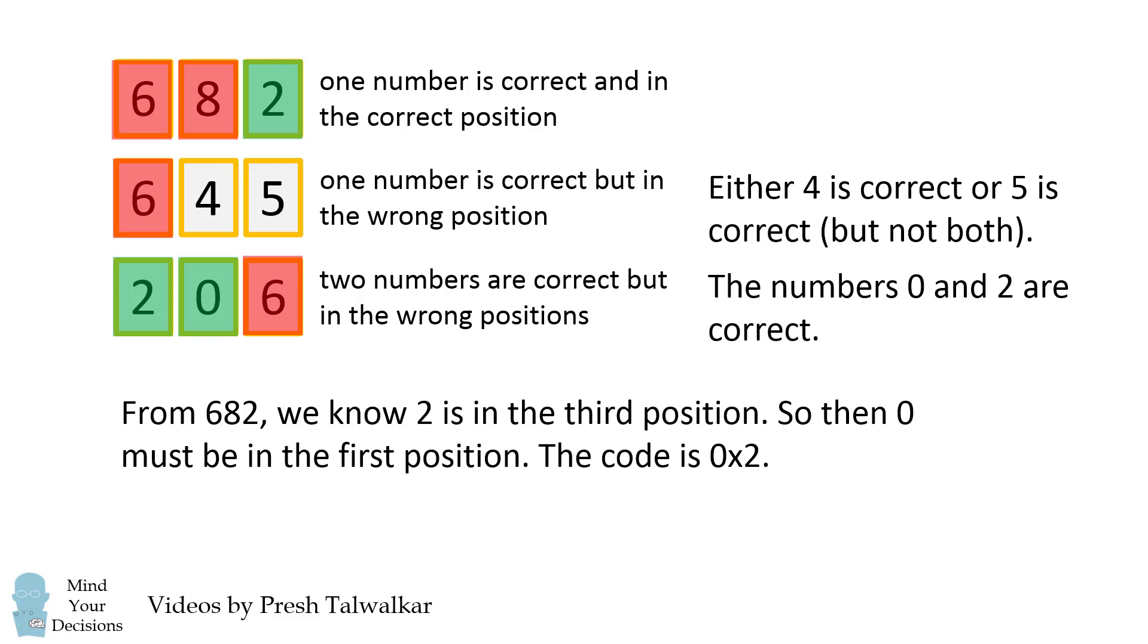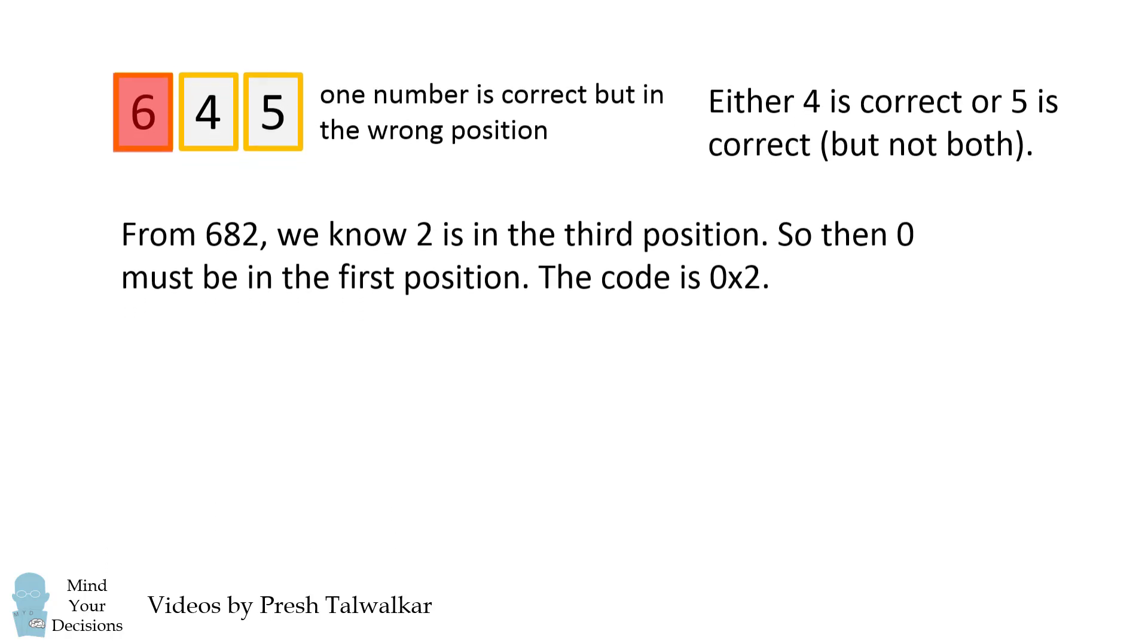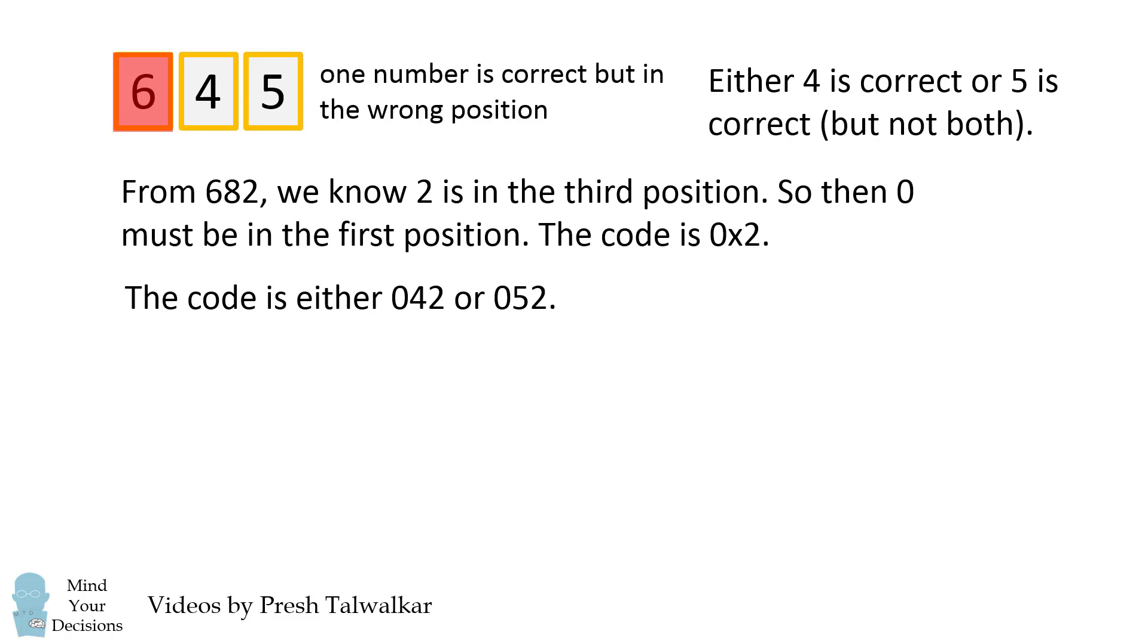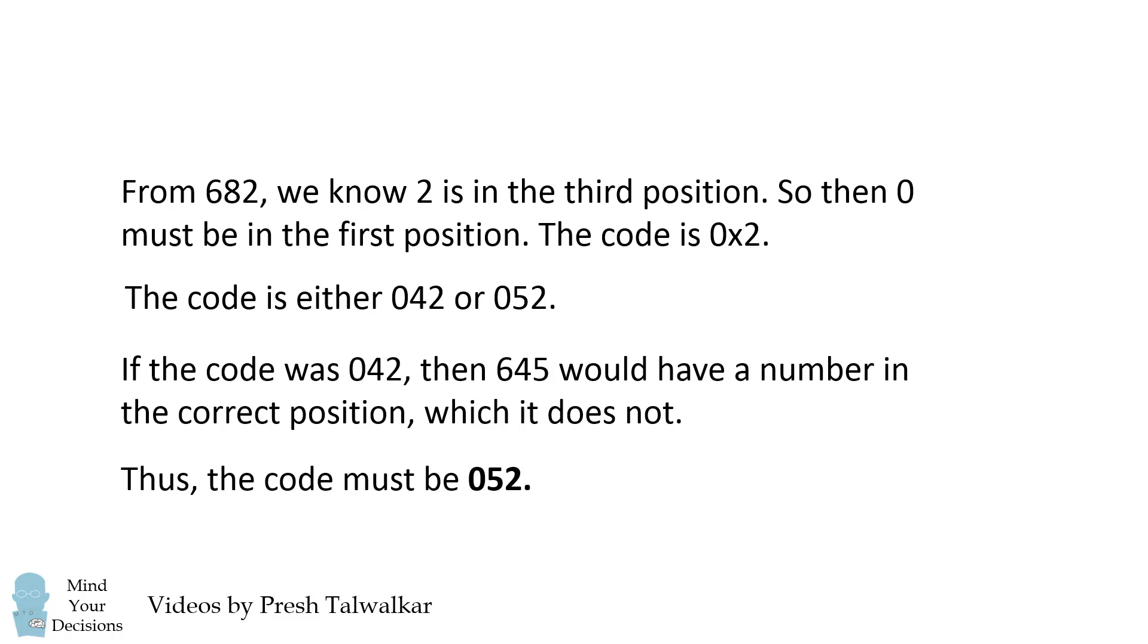How do we get that final third number? Well, let's take a look at this clue again. The code is either 0, 4, 2 or 0, 5, 2. If the code was 0, 4, 2, then 6, 4, 5 would have a number in the correct position, but it does not. Therefore, the code must be 0, 5, 2, and that's the correct answer.